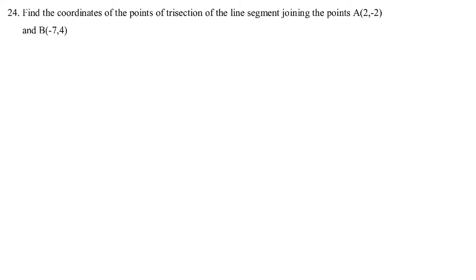Find the coordinates of the points of trisection of the line segment joining A, that is (2, -2), and B, that is (-7, 4).